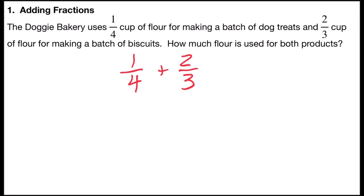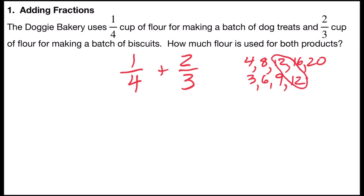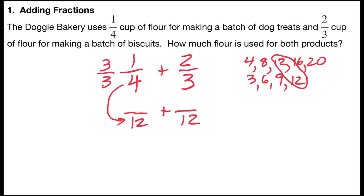So for 4 and 3, if I list the multiples of 4 and 3 — counting by 4: 4, 8, 12, 16, 20 — and counting by 3: 3, 6, 9, 12 — I see that 12 is the first multiple that's in both lists. So 12 is going to be my common denominator. Now I need to rename my fractions by multiplying by a form of 1. What times 4 gives me 12? That's 3, so I multiply by 3 over 3. Three times 1 is 3, so one-fourth will be renamed as three-twelfths.